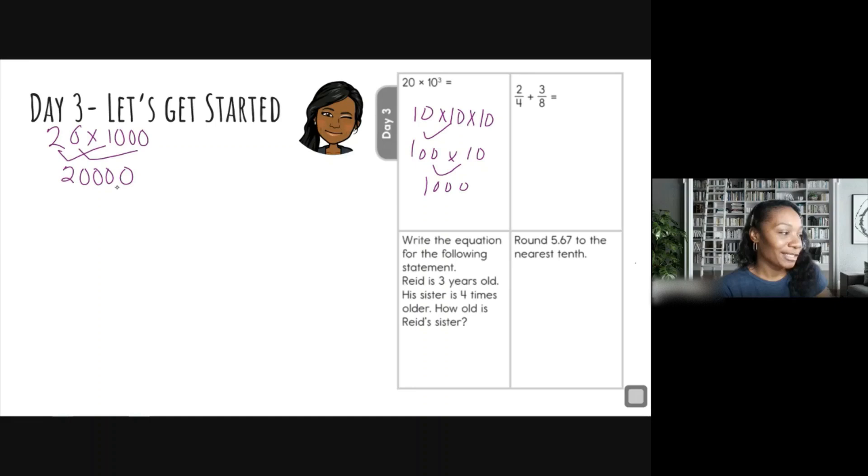So cha cha cha, comma, that comma goes right there. So our answer to 20 times 10 to the third power is 20,000. Very good. Let's move on.